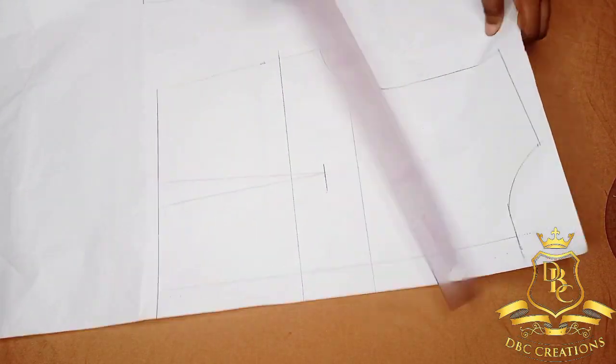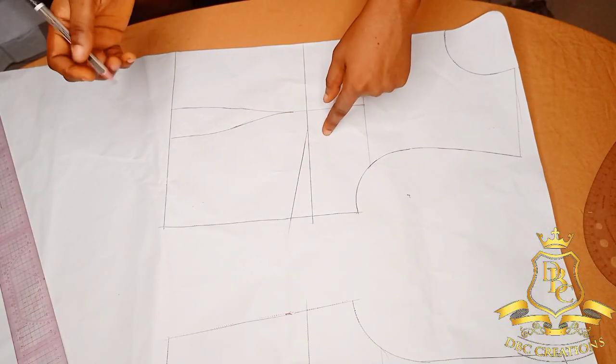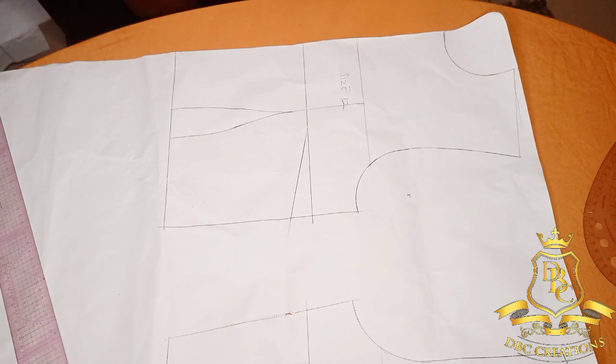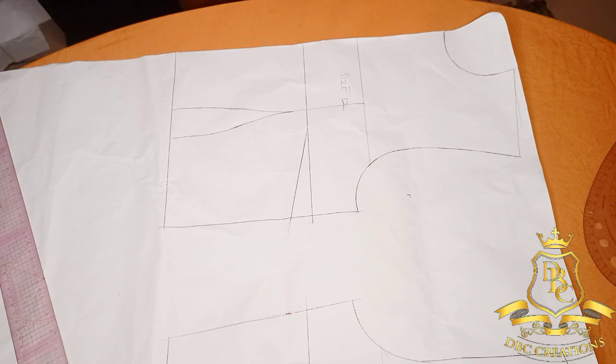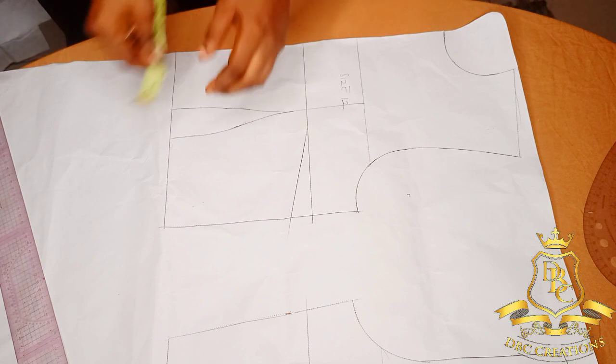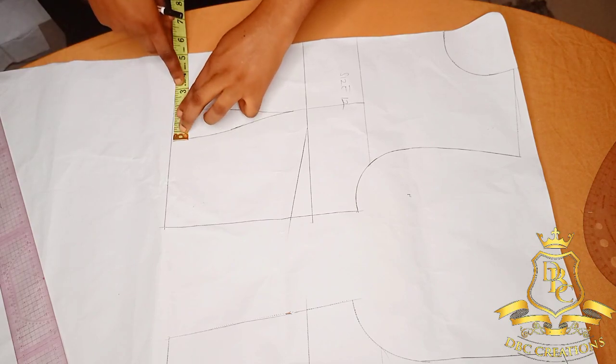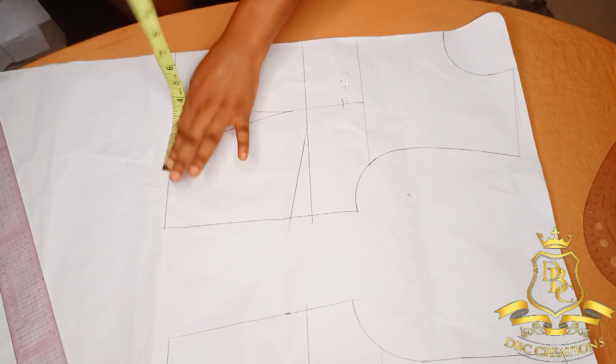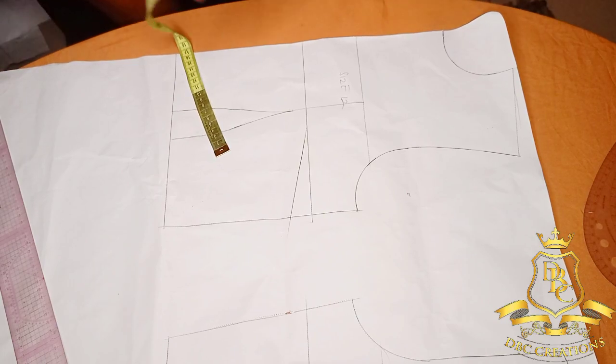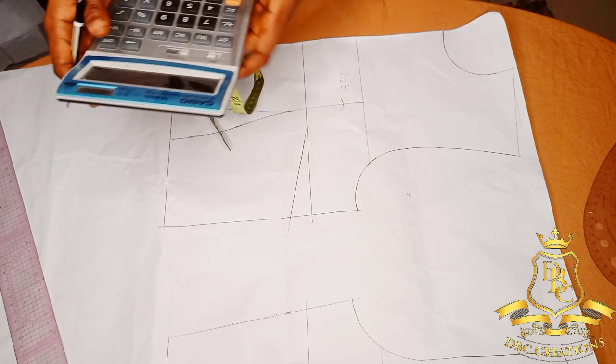The next thing for me to do is I will start altering the dart for the front. So since here is 1.5, I'm going to subtract this 1.5 or I'm going to remove that.